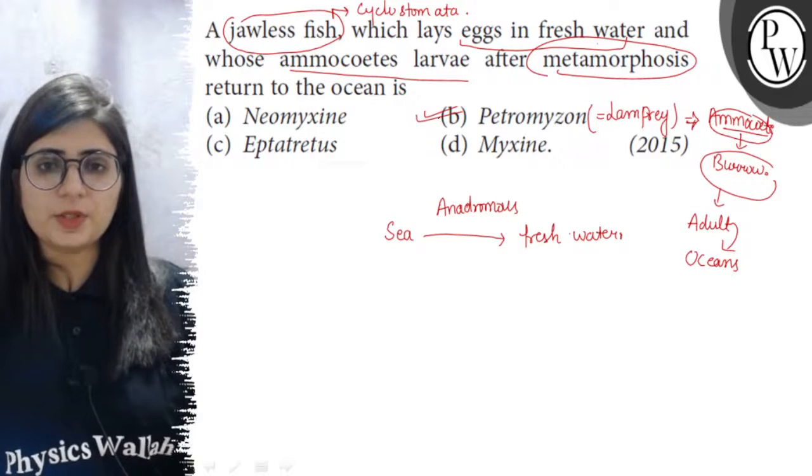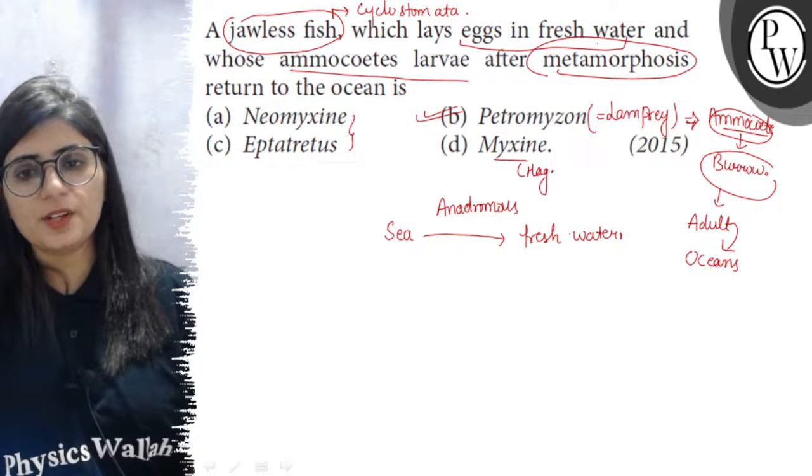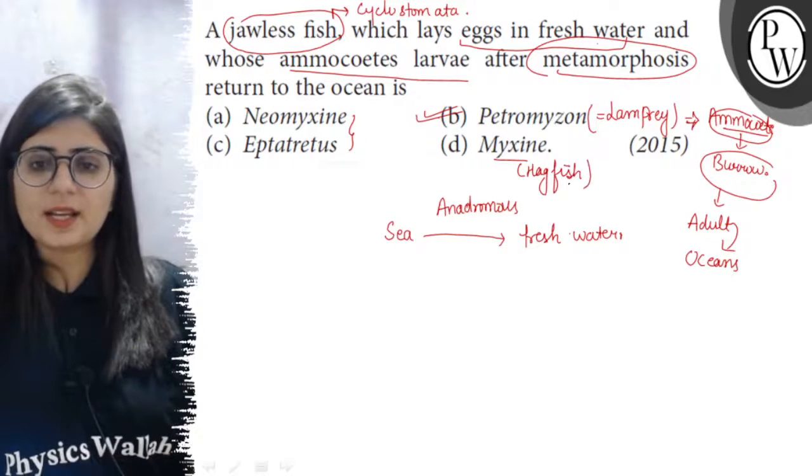It is our right option. Now, if we see other three options then Myxin. Myxin is known as the Hagfish. It is also a Cyclostome.